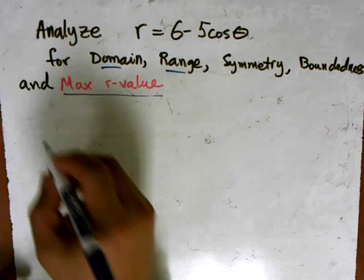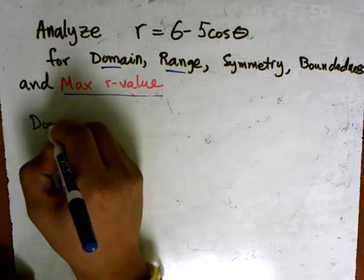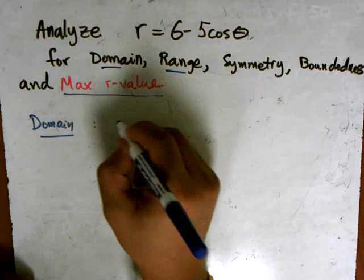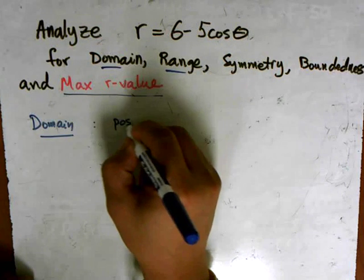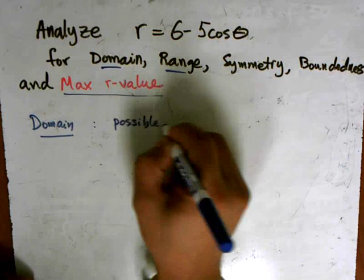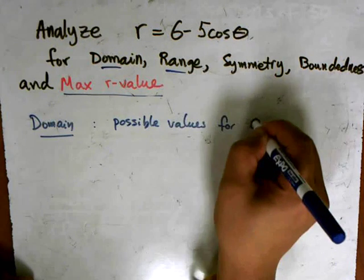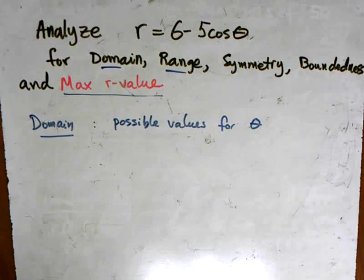One thing we need to know about the domain of a polar graph is that it is written in terms of all the possible values for θ. In other words, the domain of a function is the input of that function.